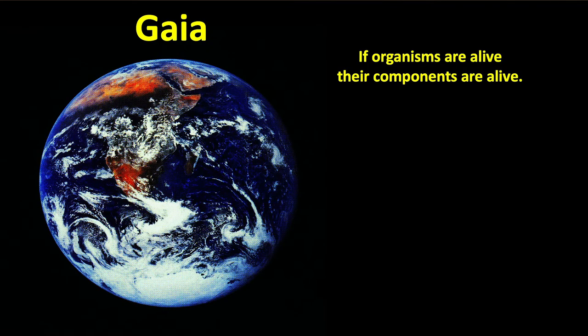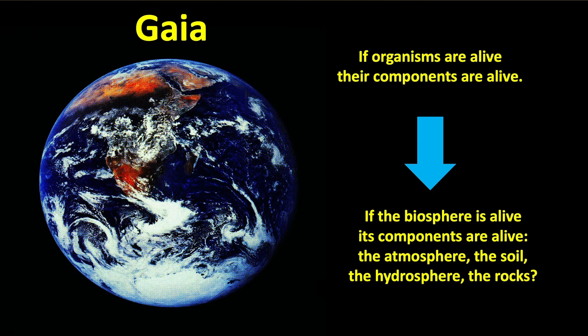So here's Gaia. If organisms are alive and their components are alive, maybe — that's how I would interpret what McClintock said — then if the biosphere is alive, its components are alive: the atmosphere, the soil, the hydrosphere, the rocks. This is essentially putting context into this definition.